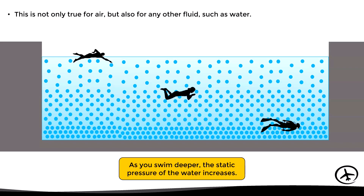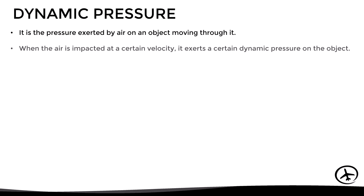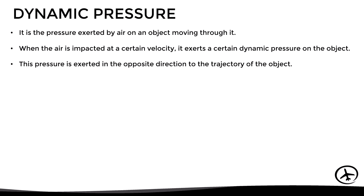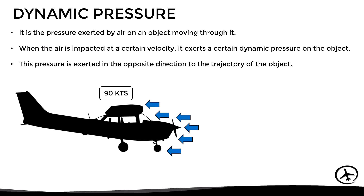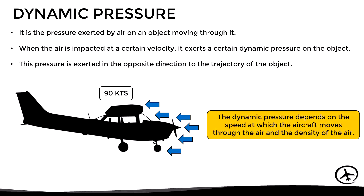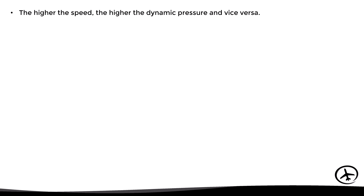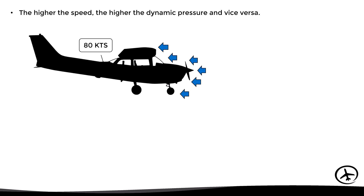Now let's move on to the dynamic pressure. This is the pressure that air exerts on an object moving through it — so when an object impacts the air at a certain speed, that air exerts a certain pressure on the object, called dynamic pressure, in the opposite direction to the trajectory of the object. This dynamic pressure depends directly on the speed at which the aircraft is moving and also on the density of the air, meaning that as we fly faster we will have a greater dynamic pressure.